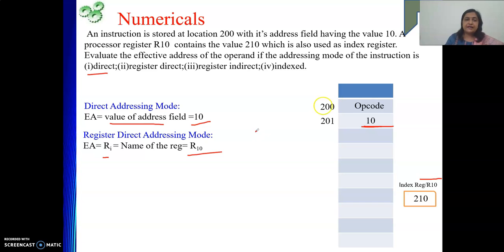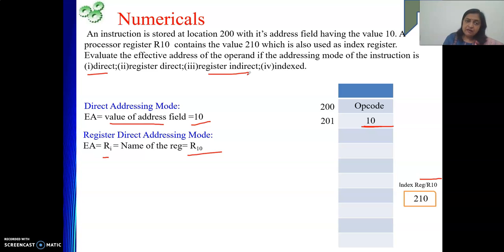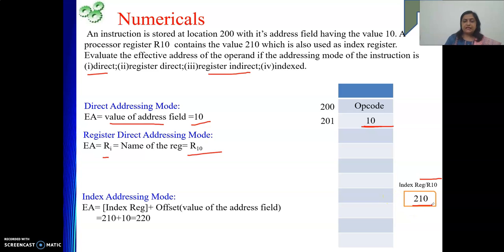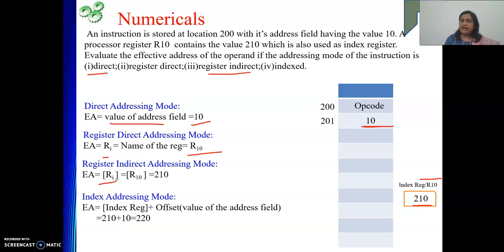Next is register indirect mode. In register indirect mode, data is in memory and the address is in the register. So the register content is now not data — it is the address of the operand. That is 210. So in register indirect mode, the content of register R10, which is 210, represents the effective address.